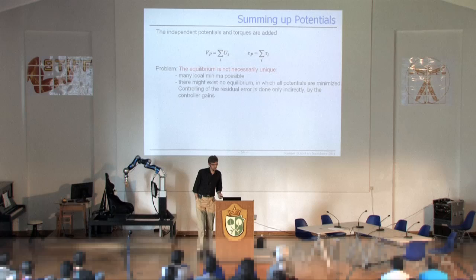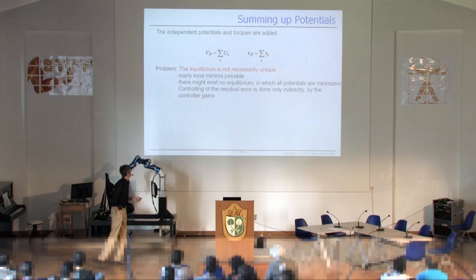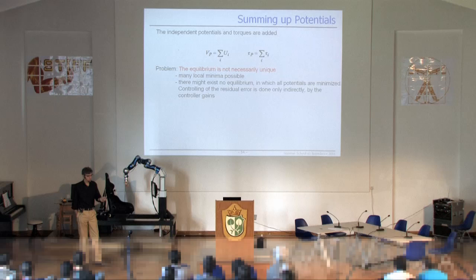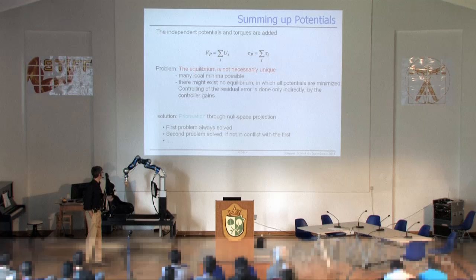Of course, at the end you are summing up the potentials, both the potentials and the torques. If you do that, the equilibrium is not necessarily unique anymore — this has some drawbacks, you could have many local minima. Probably your potentials or force fields will not have the same equilibrium point, so the forces will fight each other. The solution is the well-known prioritization through null space projection, something also propagated by Osama for many years.